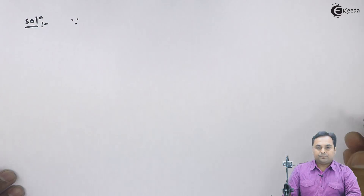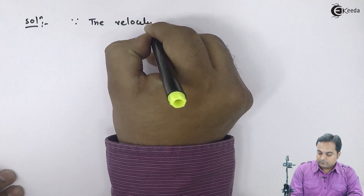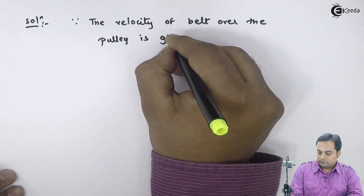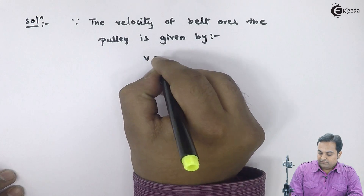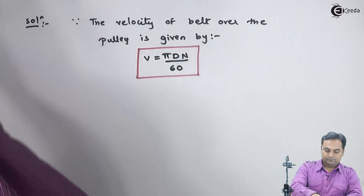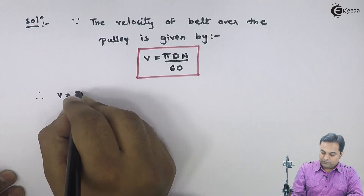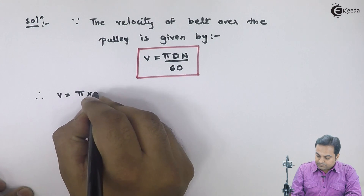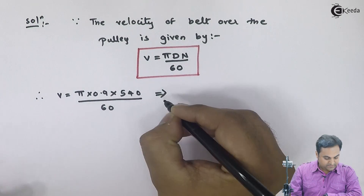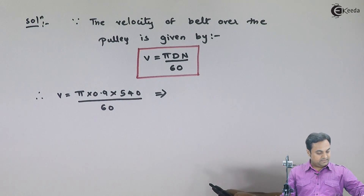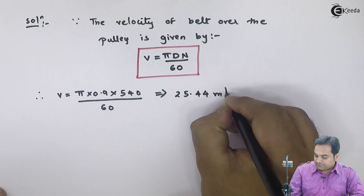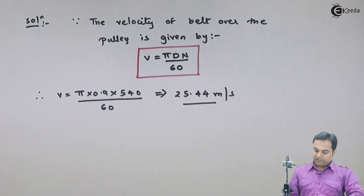Since the velocity of belt over the pulley is given by v = pi*d*n / 60, therefore v = pi × 0.9 × 540 / 60, which gives the velocity of the belt as 25.44 meters per second.